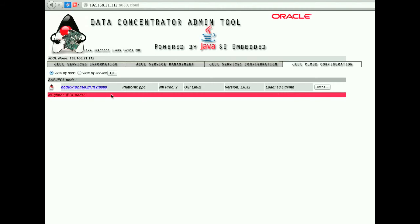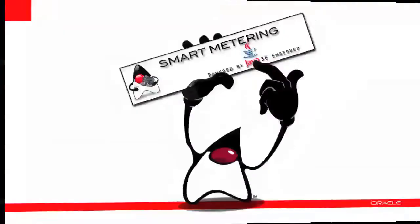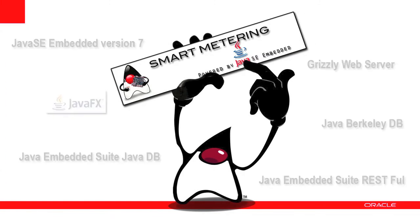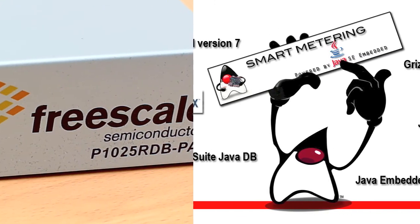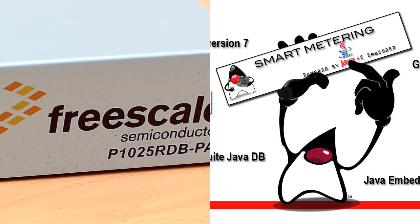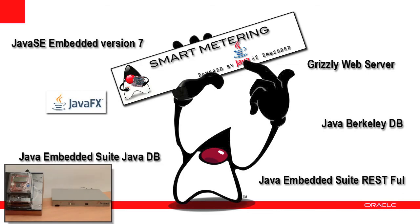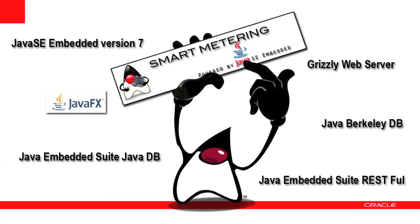To summarize, in this video we have seen a Java smart metering application running on Java SE Embedded 1.7 installed on a Freescale P1025 data concentrator. The application leverages the power of Java SE Embedded features, RESTful APIs from the Java Embedded Suite, the embedded Grizzly HTTP server part of embedded GlassFish in the Java Embedded Suite, and Java Database either as Berkeley Database or Java DB in the Java Embedded Suite. The client application leverages JavaFX 2.2.